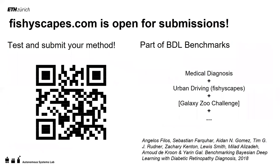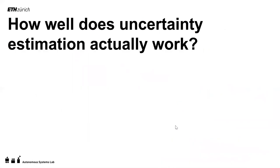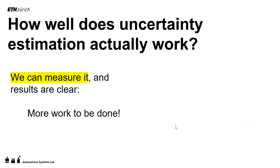I want to mention that the FishyScapes benchmark is open for submission and is also part of the Autonomous Driving benchmark set, which includes combinations of urban driving, FishyScapes, medical diagnosis, and other tasks, where the goal is to evaluate how good these methods are at introspection. If we go back to the question of how well uncertainty estimation works for these deep learning methods — it's very hard. They are not working very well, but the good news is that we can measure them and results so far are very clear: we need more work.